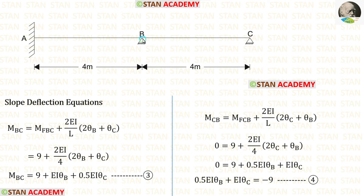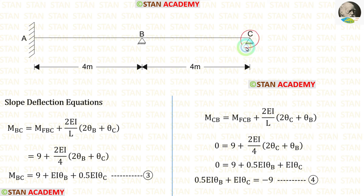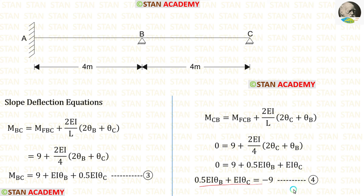Now let us make the slope deflection equations for span BC. Applying the fixed end moments — at point C there will be no moment because it is a simply supported end, so M_CB = 0. Taking the known term to the left side, it becomes negative. This gives us our first equilibrium equation — equation number 3 — and equation number 4.